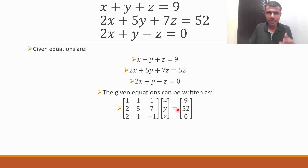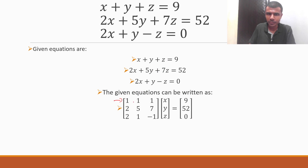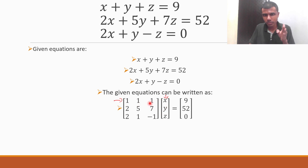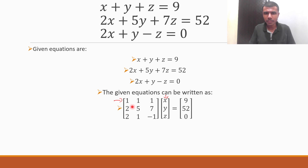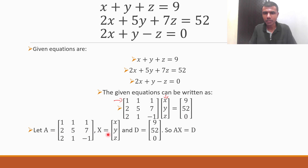If you multiply this you'll get the equations back. For example, first row into first column: 1·x + 1·y + 1·z = 9, that means x + y + z = 9, which is our first equation. Now I'm going to call the first matrix A, the second matrix capital X, and the third matrix capital D. So A equals this matrix, and hence my matrix equation is AX = D.